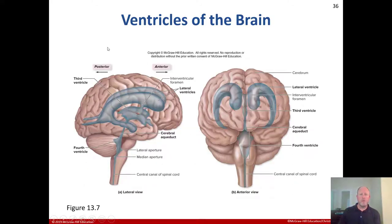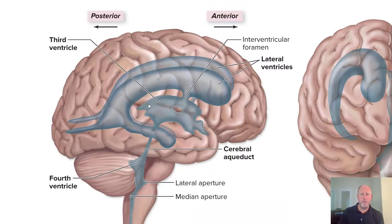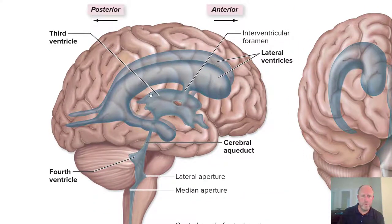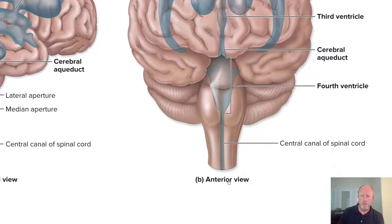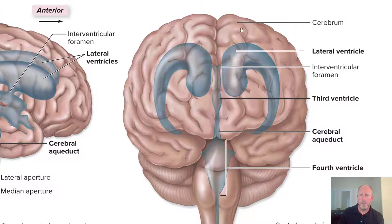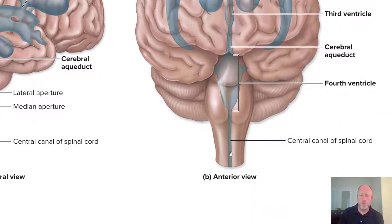Here we can view the ventricles. From the posterior side we see the third ventricle, the interventricular foramen, the lateral ventricles, the cerebral aqueduct, the fourth ventricle, and the lateral and median apertures. From the anterior (frontal plane) view we again see the lateral ventricle, interventricular foramen, third ventricle, cerebral aqueduct, fourth ventricle, and the central canal of the spinal cord.